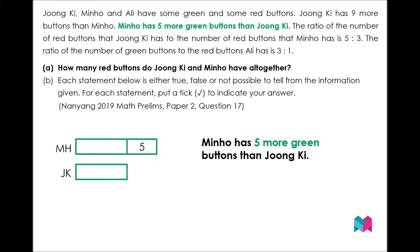Let's solve part A first: how many red buttons do Jungki and Minho have altogether? The question mentioned that Jungki has nine more buttons overall than Minho in total, but also mentioned that Minho has five more green buttons.